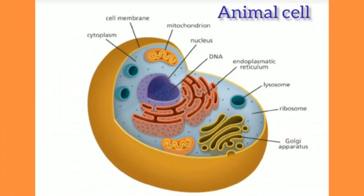In that, we will see the animal cell structure. The cell is surrounded by a membrane called the cell membrane. Inside the cell membrane, a fluid-like substance called cytoplasm is present. In the cytoplasm, many cell organelles such as mitochondria, nucleus, DNA, endoplasmic reticulum, lysosome, ribosome, and Golgi apparatus are found.